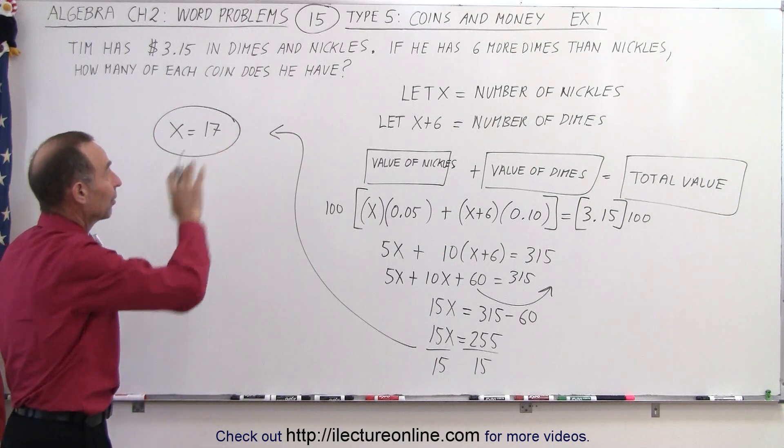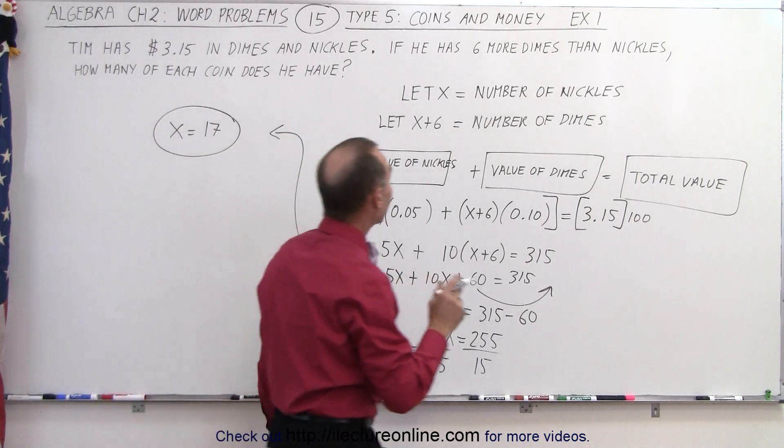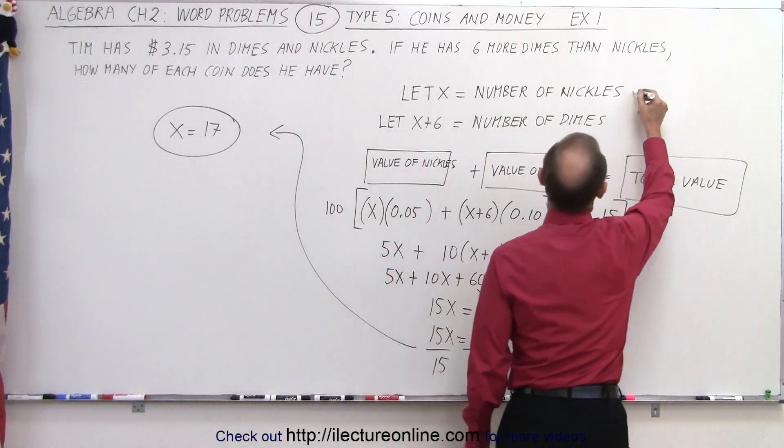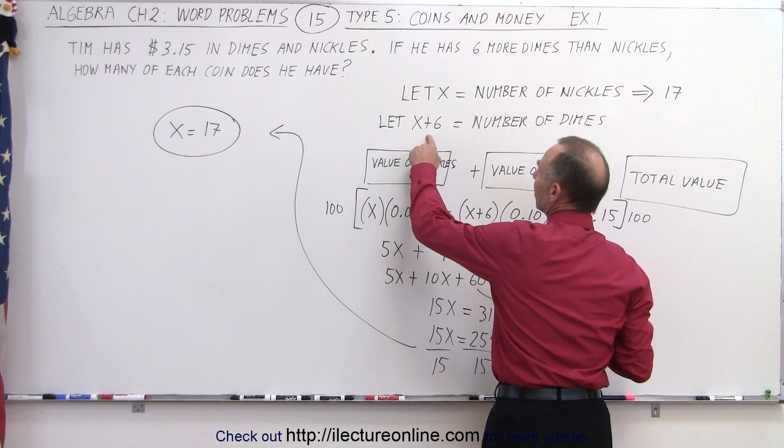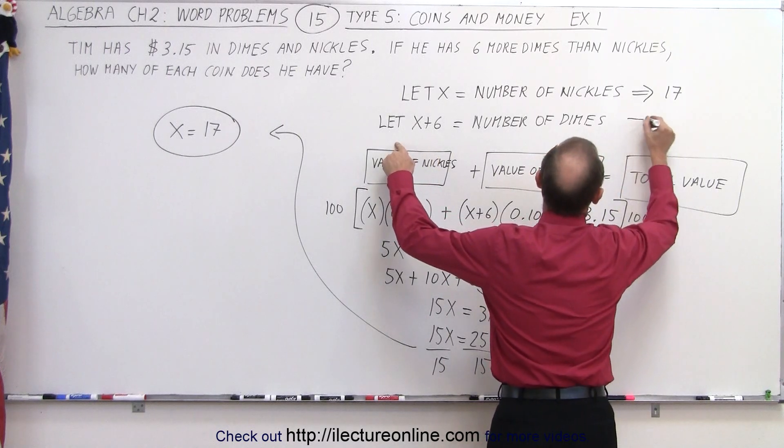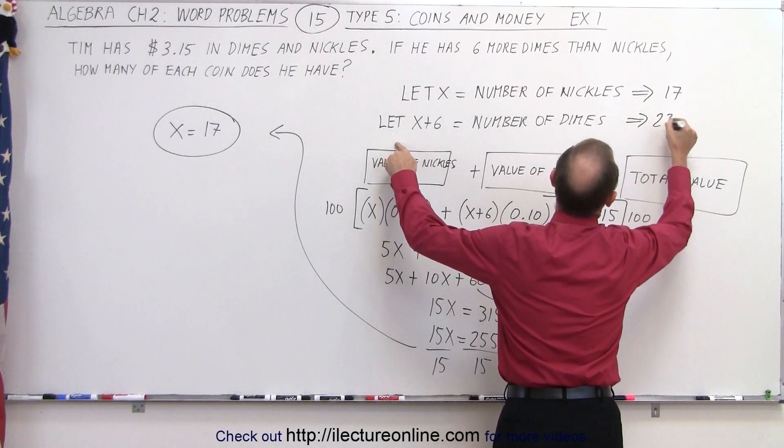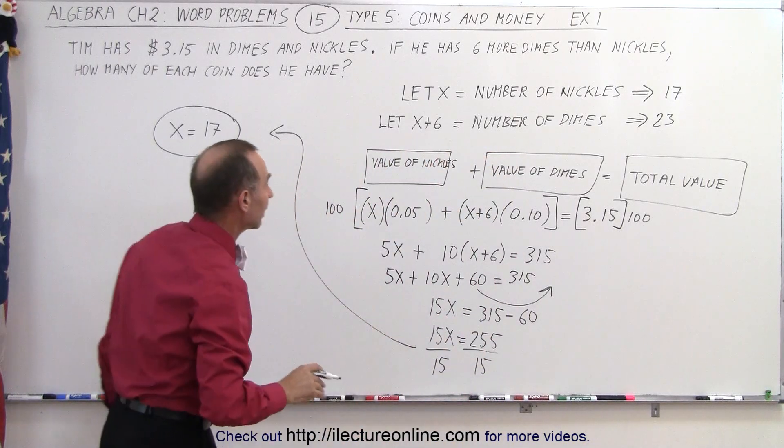Now let's go back and define the number for each. Since the x was the number of nickels, that means we have 17 nickels. But we have 6 more dimes, so 6 plus 17, that gives us 23 dimes and now let's check to see if we did this correctly.